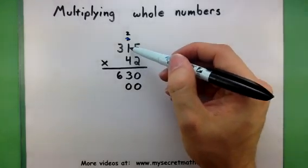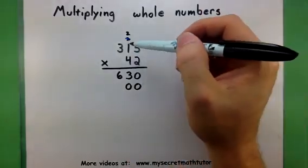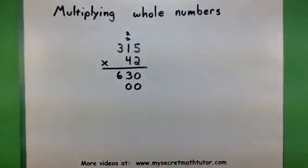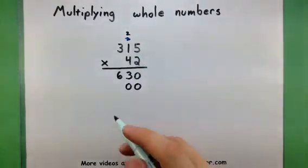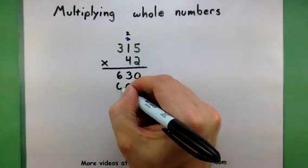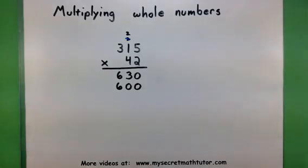So, 4 times 1 gives us a 4. And, of course, we add any numbers that are also written above it. 4 times 1 is 4, plus 2 is 6.